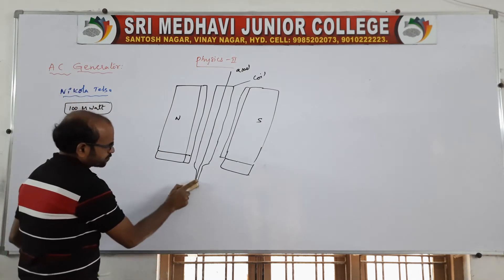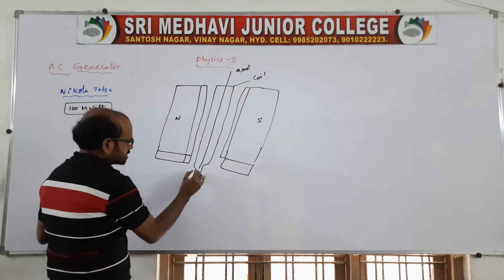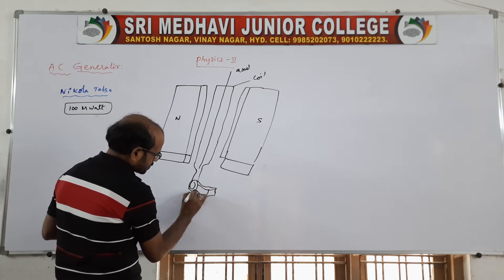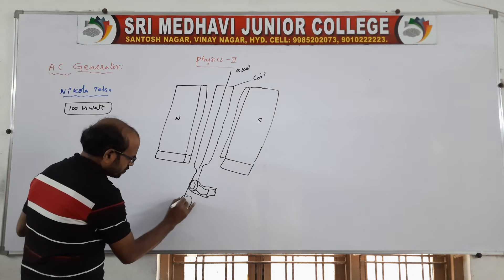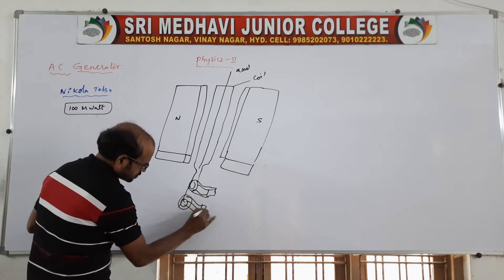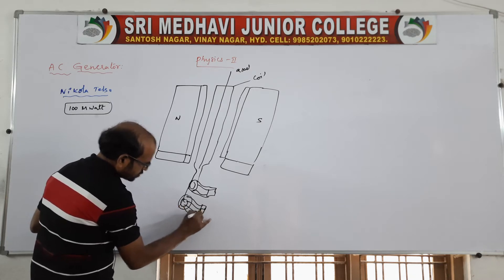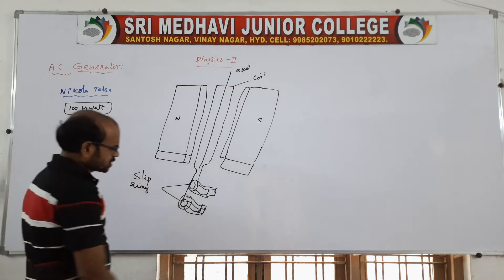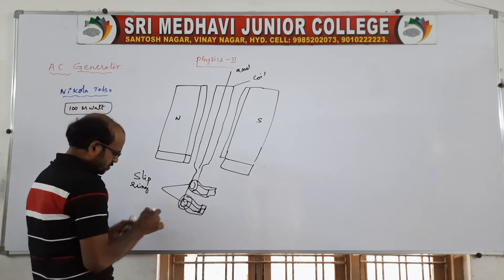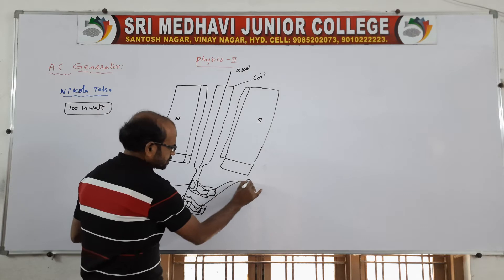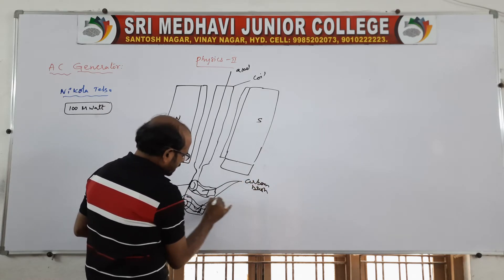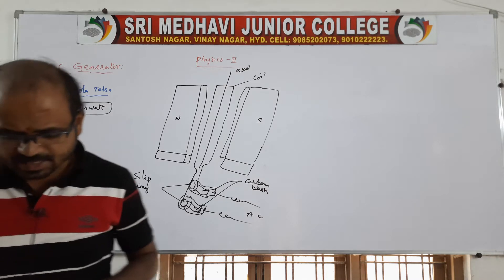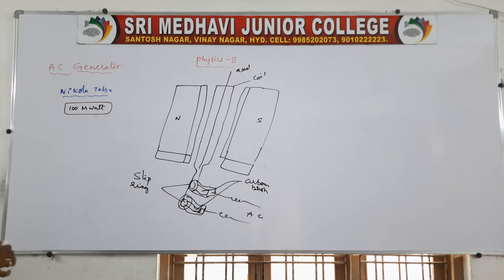This coil is connected to two slip rings. These two slip rings are connected to carbon brushes. From the carbon brushes we get the output — that is, we get alternating current or alternate EMF. So from the carbon brushes we obtain the alternate EMF.